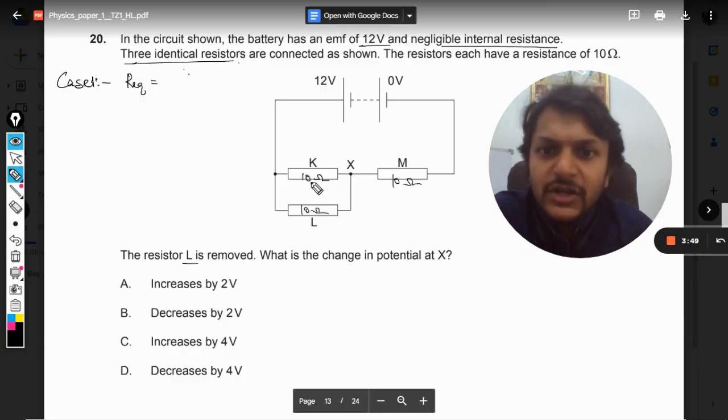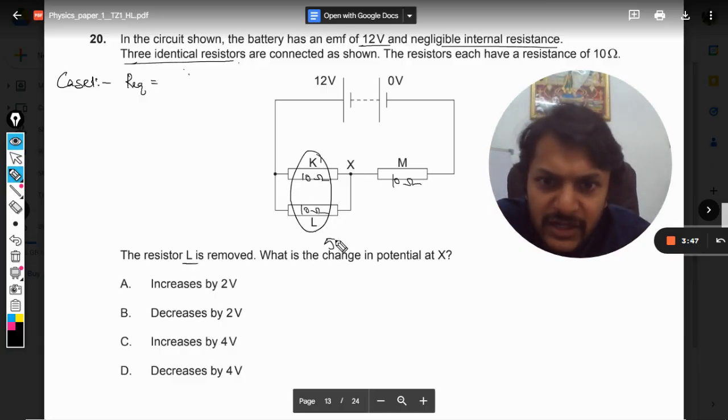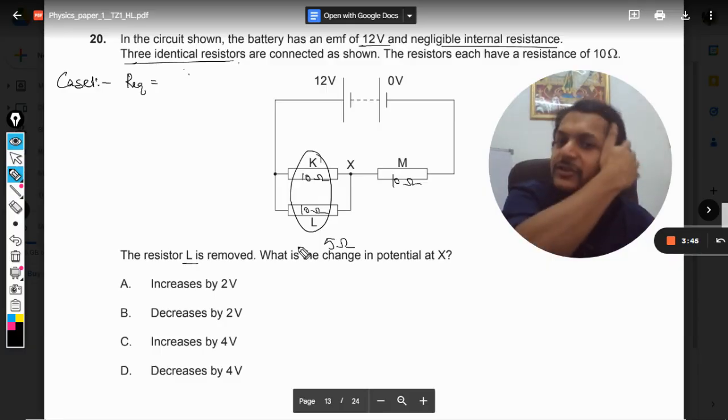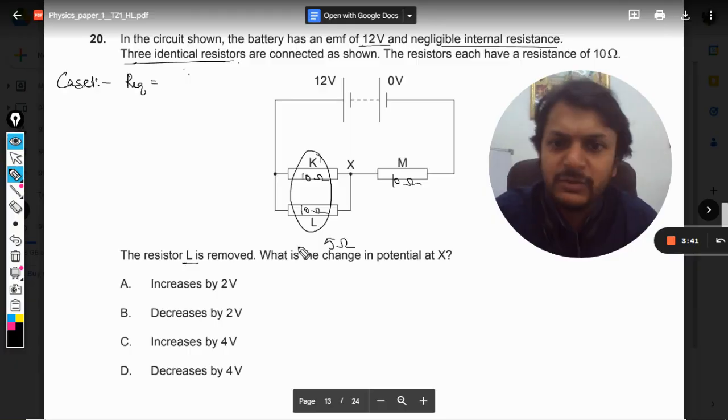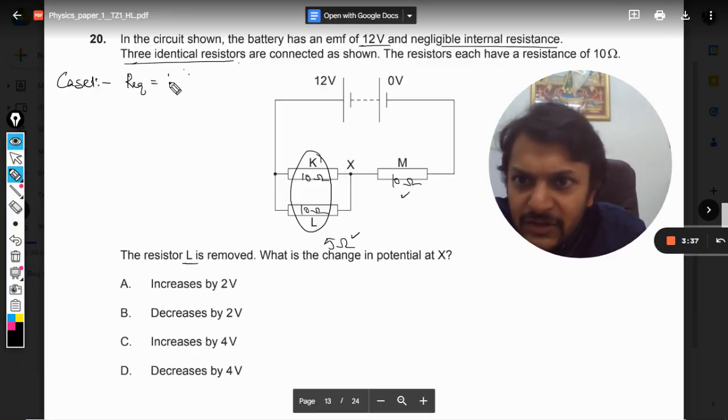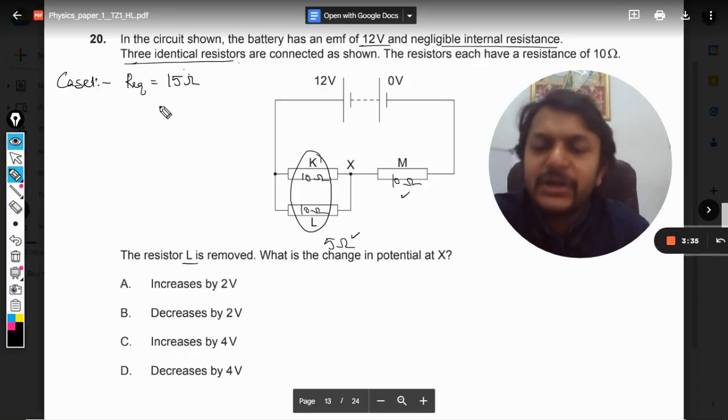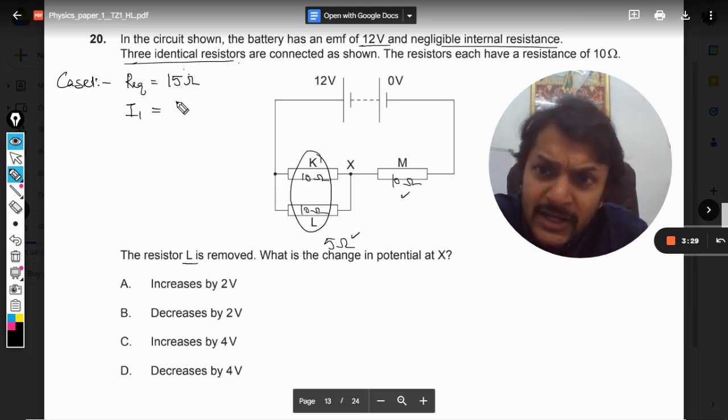So the resultant of this will become 5 ohm. Otherwise also there is a formula, I think you must be knowing that. So this is 5 ohm and this is 10, so R equivalent in case number one becomes 15 ohm. So what will be the current? I am just calling it I1 because it is case number one. So it is V divided by R, it is going to be 12 by 15.